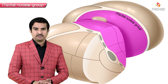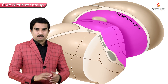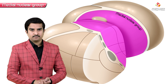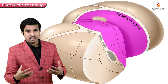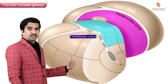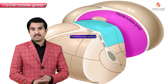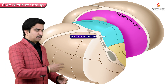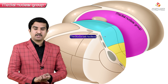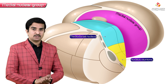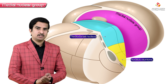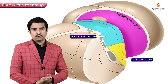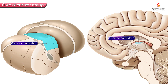The medial nuclear group of the thalamus forms a large region consisting primarily of the mediodorsal nucleus, which is also called the dorsomedial nucleus of the thalamus. Some much smaller components are also present, called nucleus reuniens, which are not important here. Let's concentrate specifically on the dorsomedial nucleus.